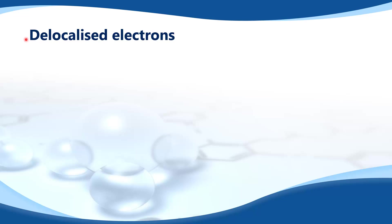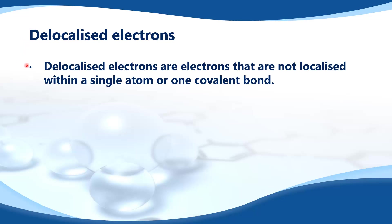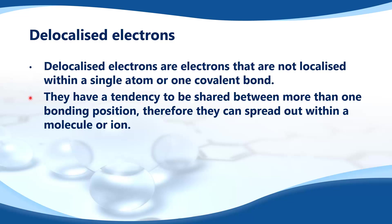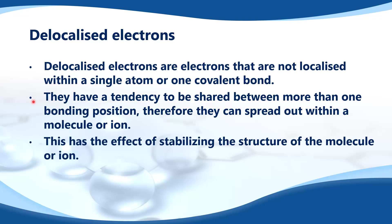Delocalized electrons are electrons that are not localized within a single atom or one covalent bond. They have a tendency to be shared between more than one bonding position, therefore they can spread out within a molecule or ion. This has the effect of stabilizing the structure of the molecule or ion.